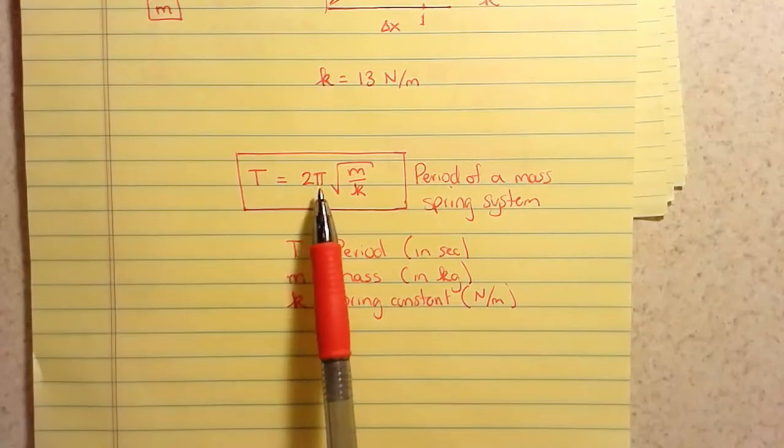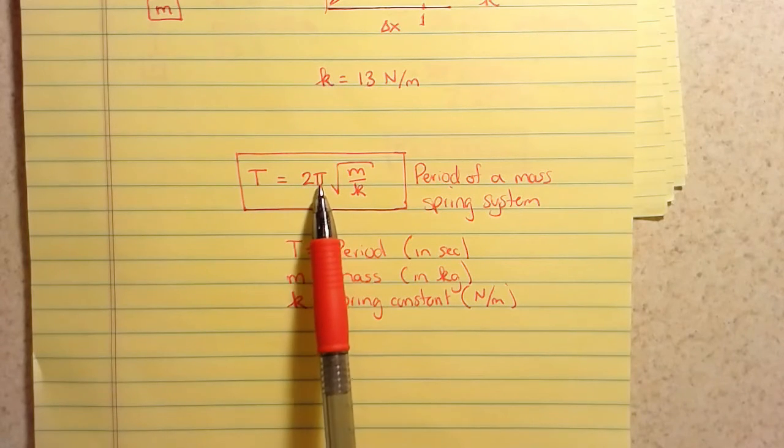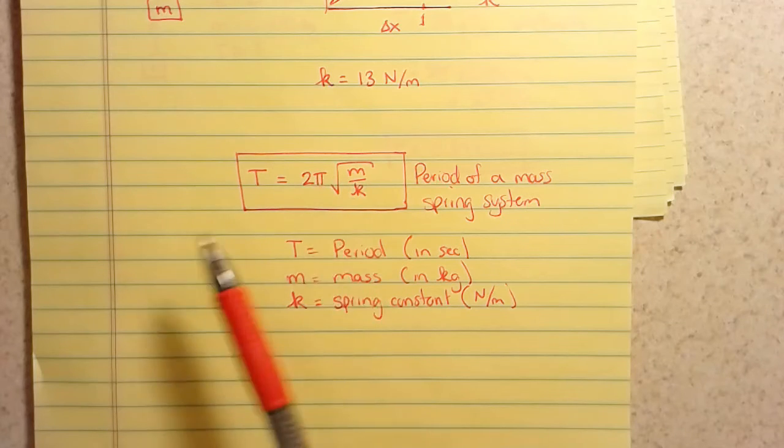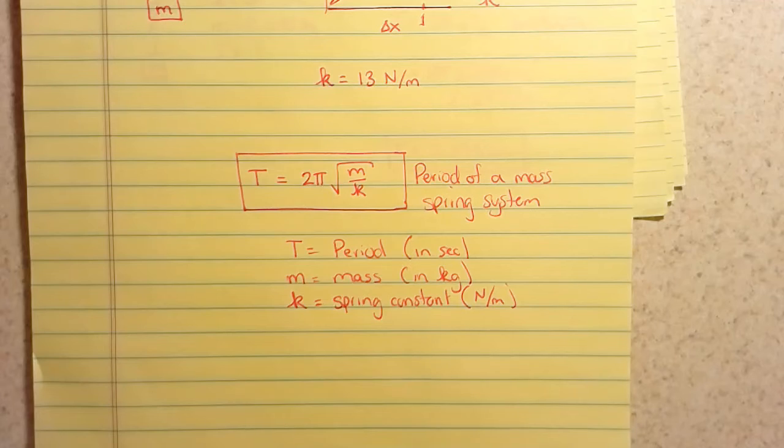And then if you need to solve for m or k, you can square both sides to get the radical out of the way. You'll have T squared equals 4 pi squared m over k. You can multiply both sides by k, and then you can solve for whatever you need to. So your job is going to be to solve some problems. Homework 8.2 is online, and you need to solve those. So make sure you get working on those sometime during the day on Thursday.